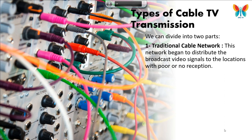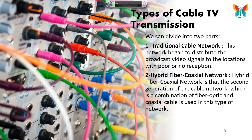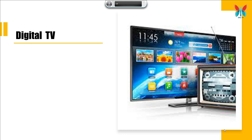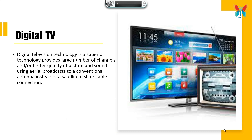Types of cable TV transmission. We can divide into two parts. One: traditional cable network, which began to distribute broadcast video signals to locations with poor or no reception. Two: hybrid fiber coaxial network, the second generation of cable network, which uses a combination of fiber optic and coaxial cable.